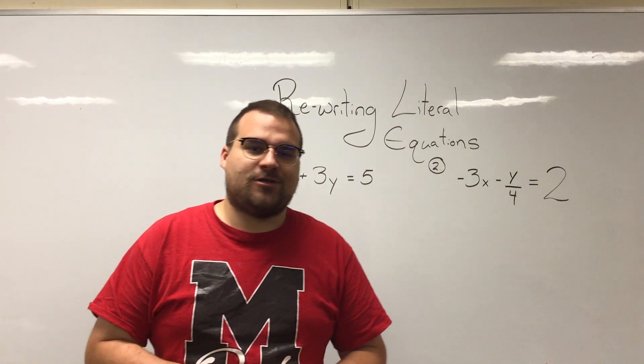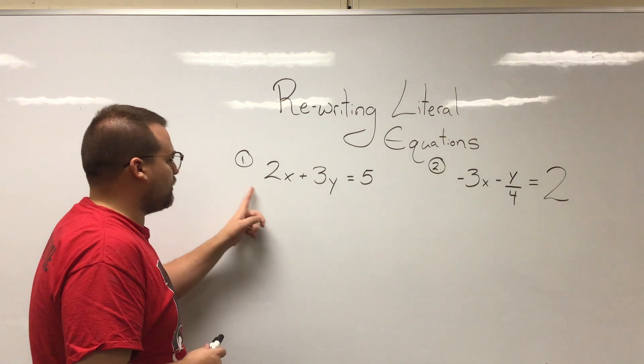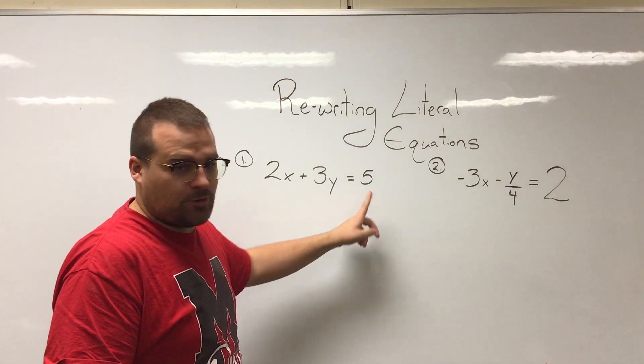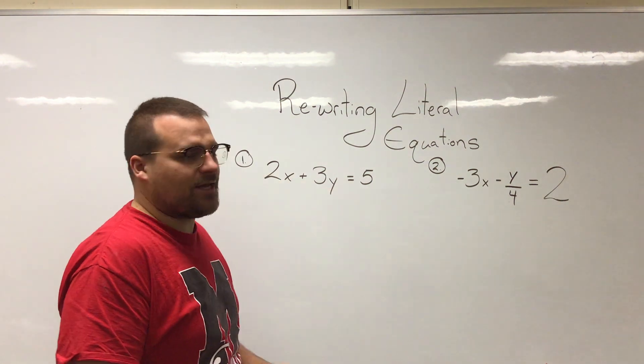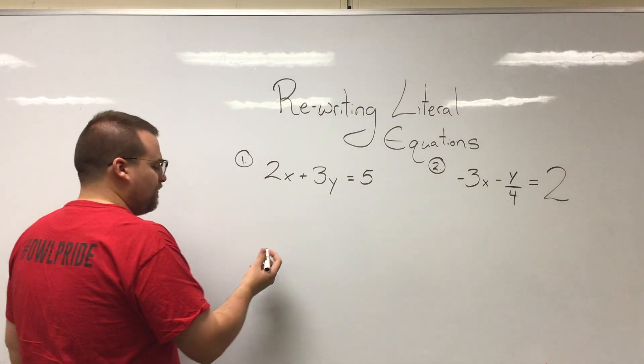So let's say we want to isolate the variable y. Our goal is going to be to take this equation as it currently stands, 2x plus 3y equals 5, move some things around to where instead of this it says y equals something.